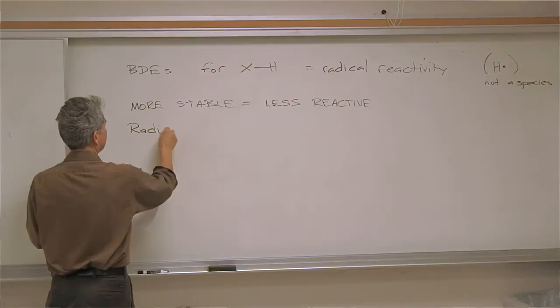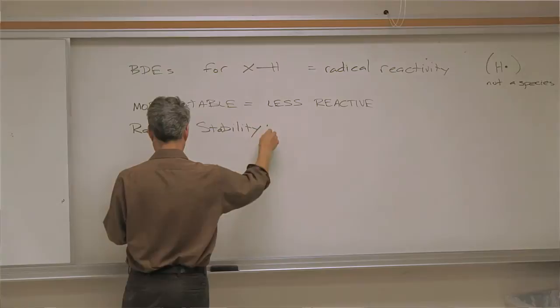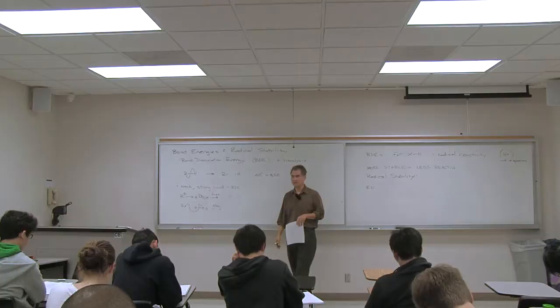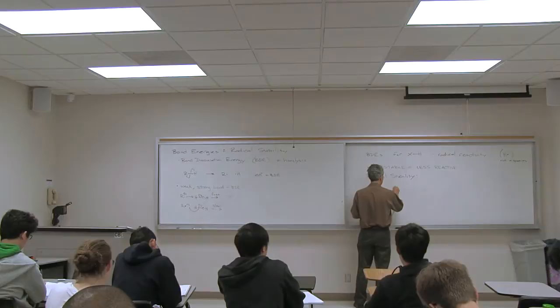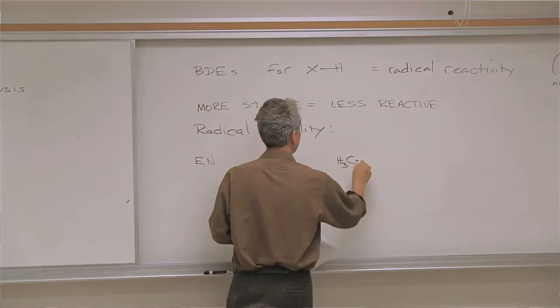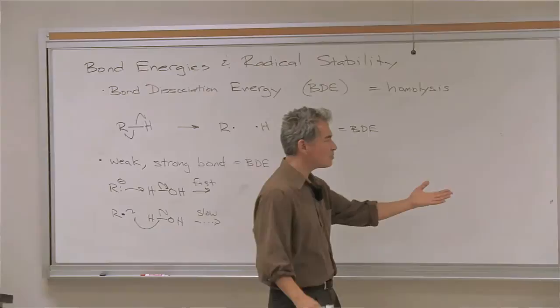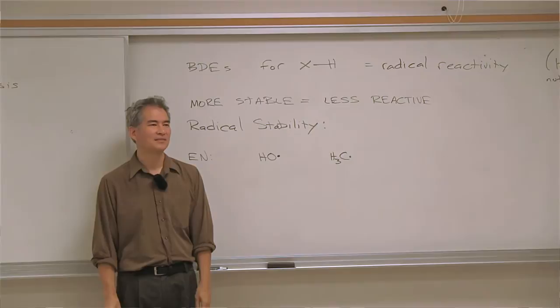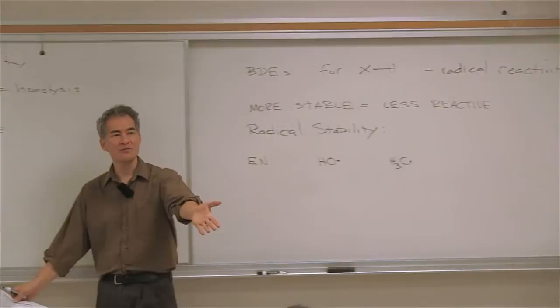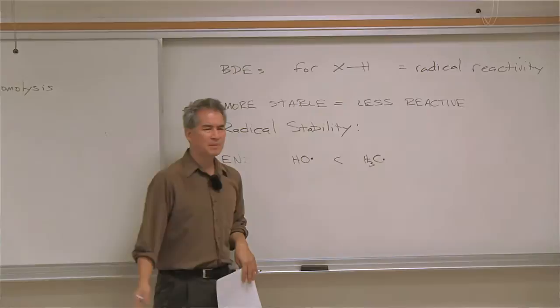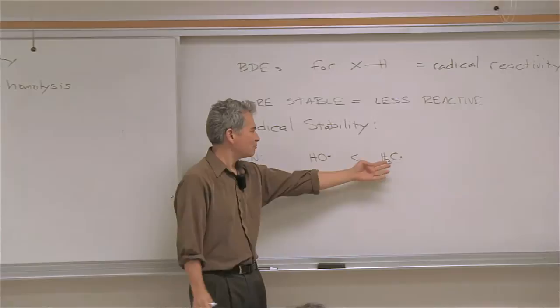Here's what we learned about radical stability from bond dissociation energies. I'm going to start off by looking at a trend predicted by electronegativity. If you compare the reactivity of an oxygen-based radical versus a carbon-based radical — oxygen is more electronegative, it does not want to have one of its electrons removed. There are more protons in the nucleus of oxygen; if you were an electron, you'd want to hang around an oxygen nucleus. So a carbon-based radical should be way more stable than an oxygen-based radical if everything else is equal.